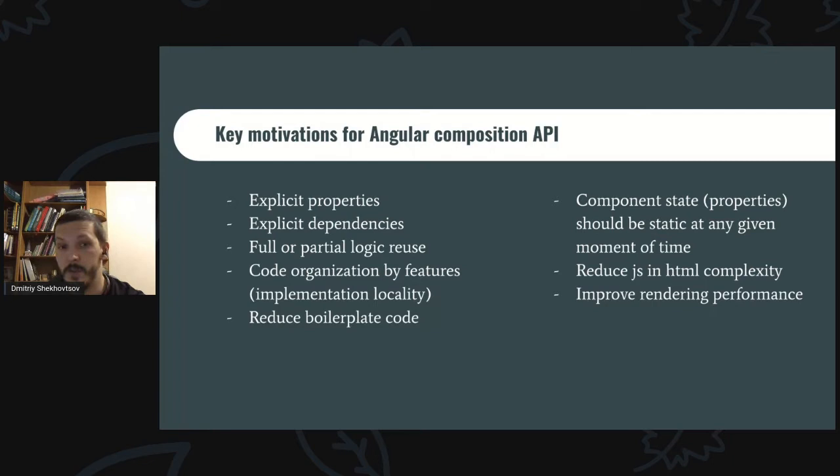Knowing the bad parts of mixins, higher-order components, and other code reuse approaches, what are our key motivations for an Angular Composition API? We should achieve: explicit properties and dependencies, first-party logic reuse, organized code by features, and reuse of boilerplate code — which is a lot, usually.